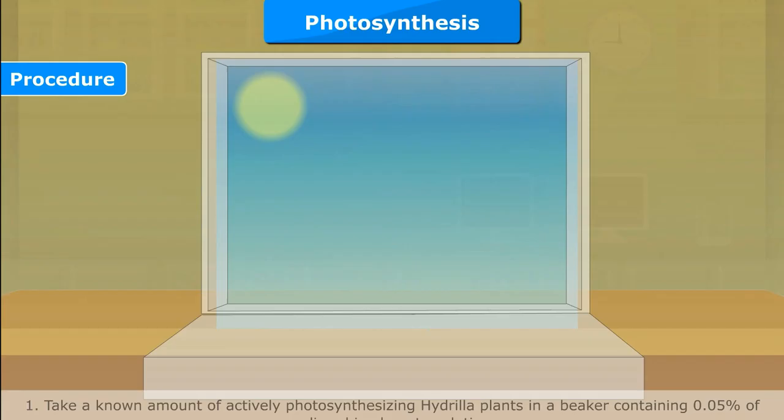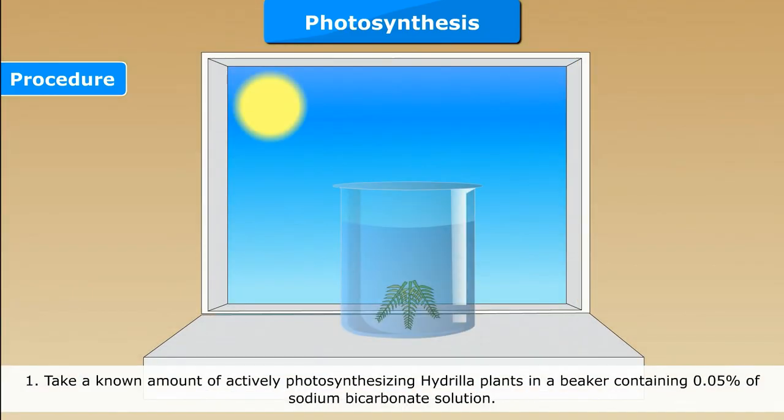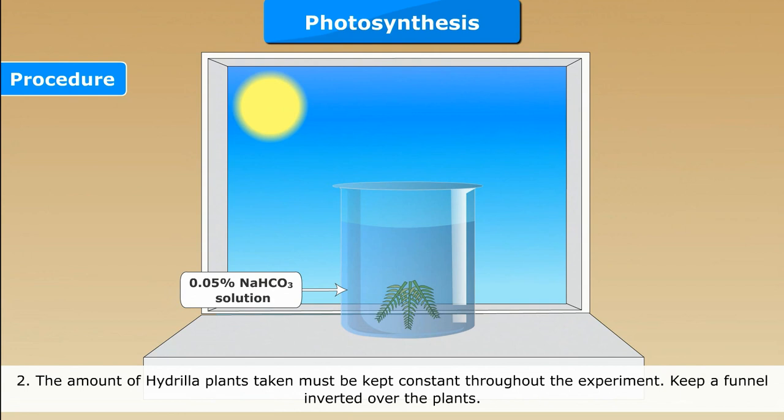Procedure: Take a known amount of actively photosynthesizing hydrilla plants in a beaker containing 0.05% of sodium bicarbonate solution. The amount of hydrilla plants taken must be kept constant throughout the experiment.